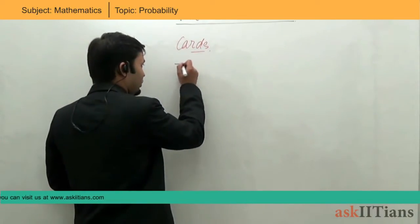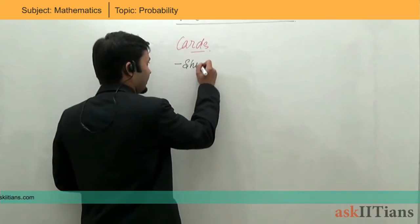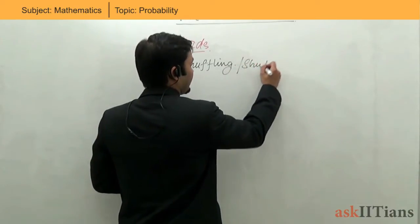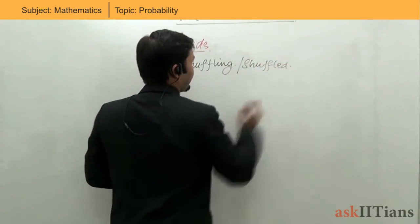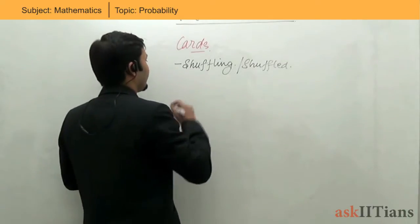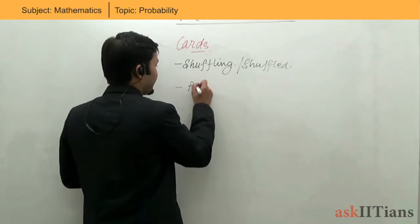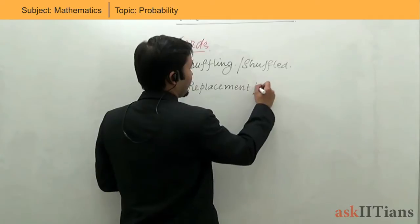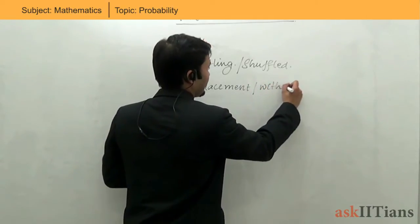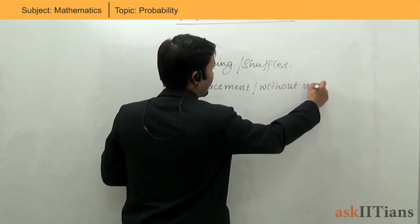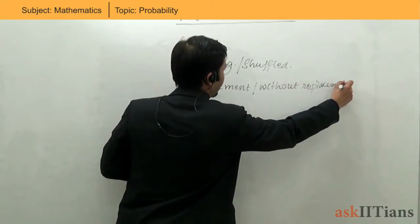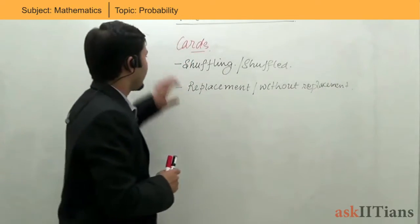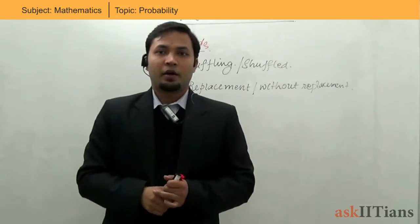In cards, there are two terms that you will find very commonly. The first one is shuffling — okay, shuffled. And the second one would be replacement and without replacement.